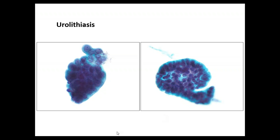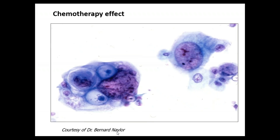Treatment or chemotherapy effect can cause vacuolated cytoplasm and polychromasia in umbrella cells, with some vacuoles and color changes in the cells, along with some pleomorphism. These are umbrella cells that have gone through chemotherapy effect and therefore show an exaggerated reactive process. This picture was from my late mentor, Dr. Barney Naylor, as were some of the viral pictures. I always remember him very fondly.